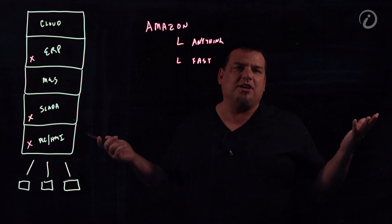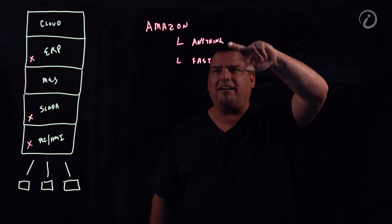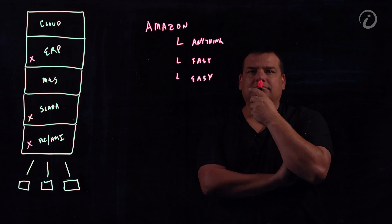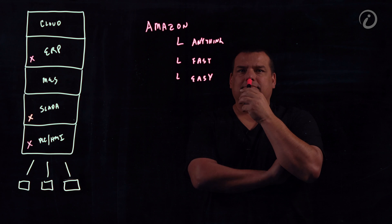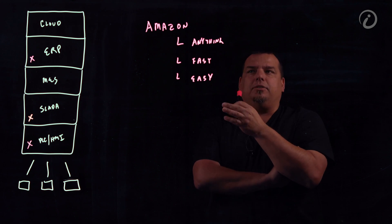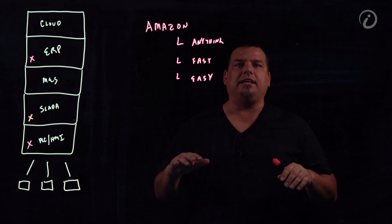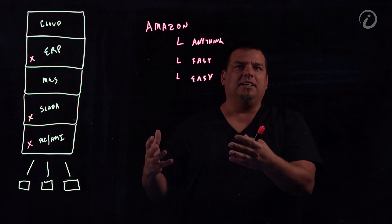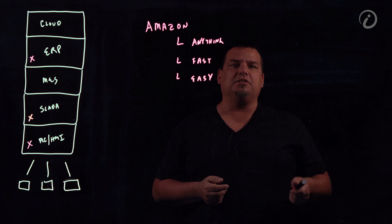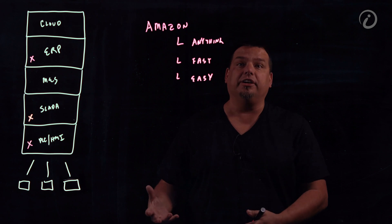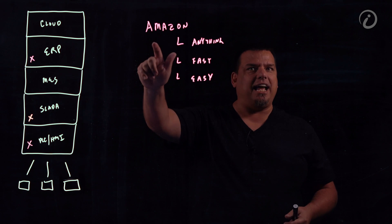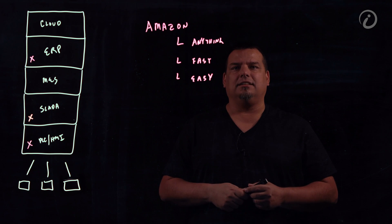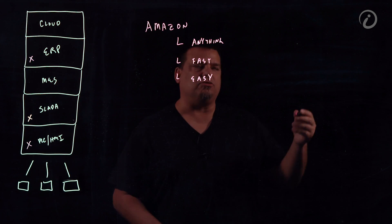So why does Amazon rule the world? It's very simple. You can get anything there. You can get it fast and you can get it easy. How does Amazon do that? One of those reasons is they leverage the third-party sellers. But they have lots of streams, right? The third-party seller is responsible for providing the good, but it's still Amazon's mechanism. How is it they're able to do this? Because they've mastered the logistics and the warehousing. That's right.